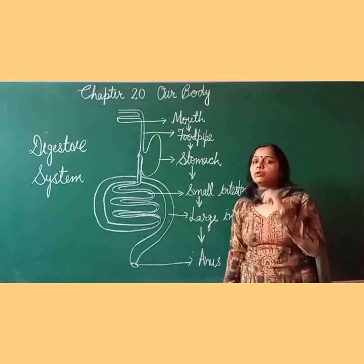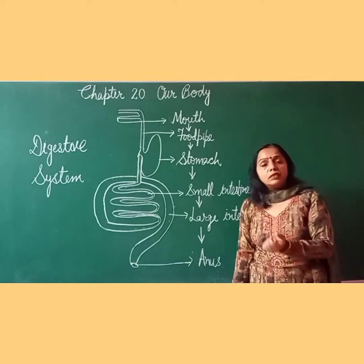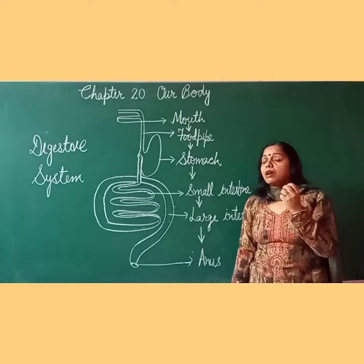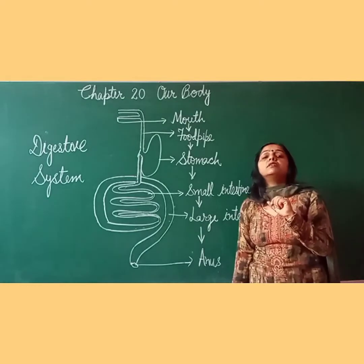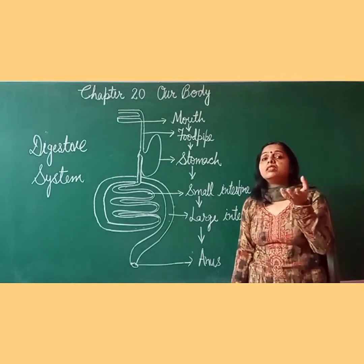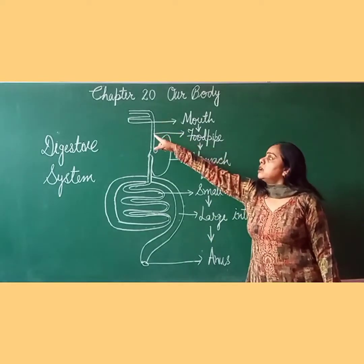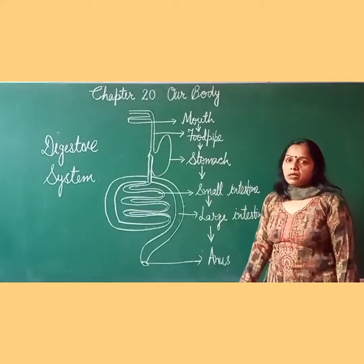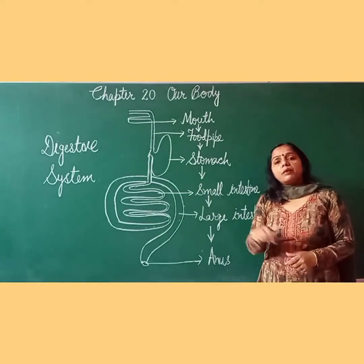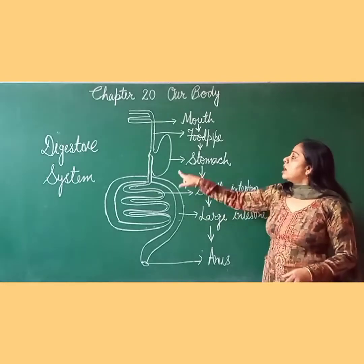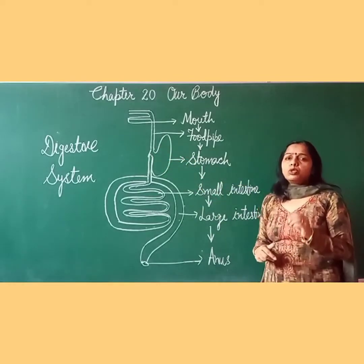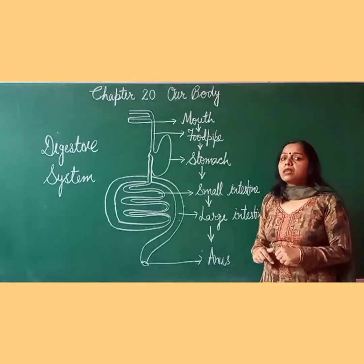First of all, where does the food go? Into the mouth. Teeth bite and chew the food. Saliva gets mixed with the food so that we can swallow it easily. The food that we swallow goes to the stomach. In the stomach, digestive juices get mixed with the food and break it down.